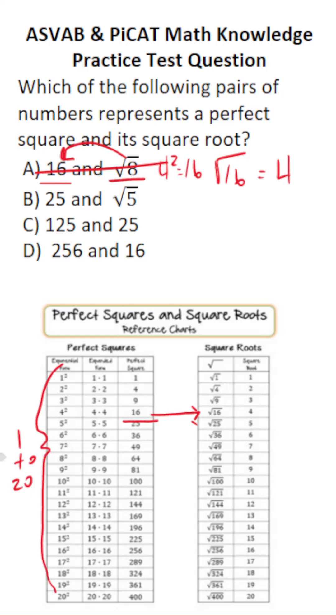Is 25 a perfect square? It is right here. 5 squared is 25. What is the square root of 25? The square root of 25 is 5, not the square root of 5. So this is not correct.